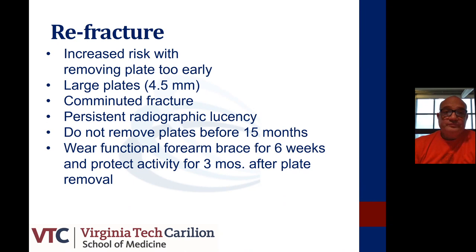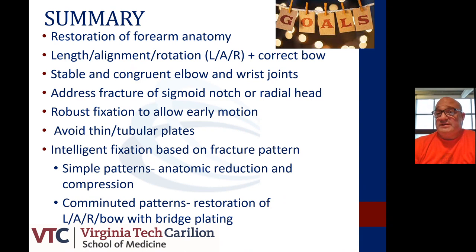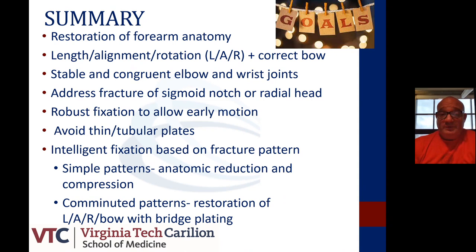In summary: consider the forearm as a unit composed of the radius and ulna, but also the distal radioulnar joint, the proximal radioulnar joint, and the interosseous membrane. Restore forearm anatomy with fixation techniques — restore length, alignment, rotation, and correct the bow. Provide stable, congruent elbow and wrist joints. Address fractures involving the sigmoid notch and radial head. Provide robust fixation to allow early motion. Avoid thin tubular plates and use intelligent fixation based on fracture pattern — for simple patterns, obtain anatomic reduction and compression; for comminuted patterns, restore length, alignment, rotation, and the bow with bridge plating. Thank you.